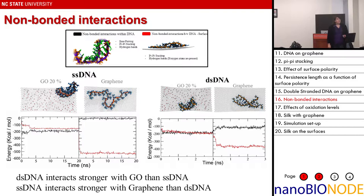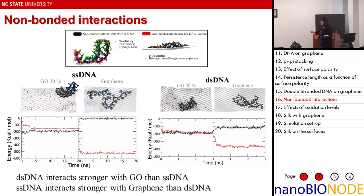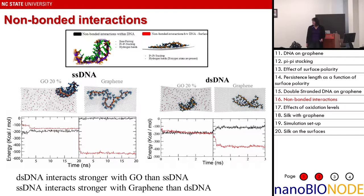[Audience question: the dsDNA graph only shows 3 nanoseconds, is that because it happens much faster?] No, we just wanted to highlight a jump at the beginning — otherwise you'd just see a flat level, so we zoomed in on the beginning. It's 100 nanoseconds for both simulations.